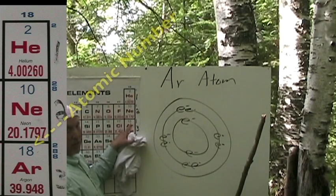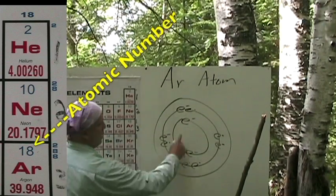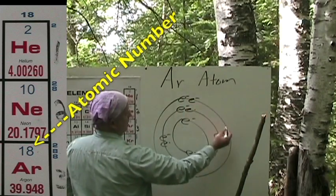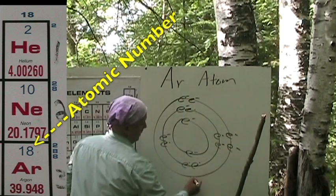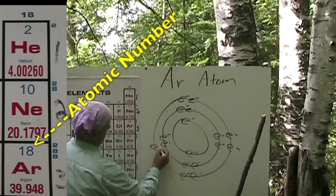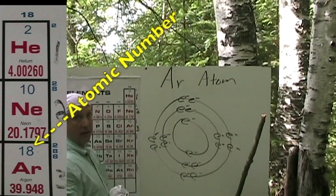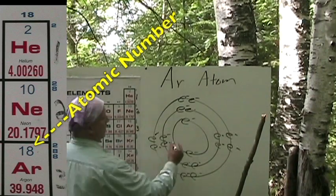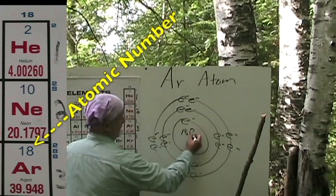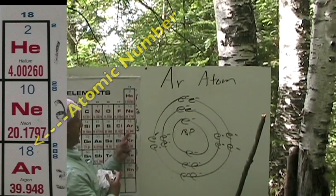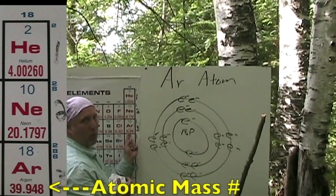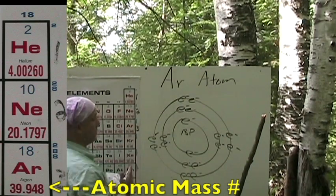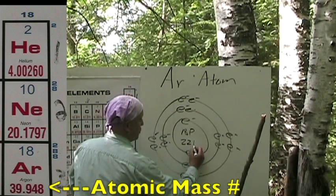So if we have 18 protons, we have to have 18 electrons. Now let's fill in our nucleus. Atomic number of 18 means 18 protons. And we had 39.9, so we round that to 40. What's 40 minus 18 is 22 — so 22 neutrons.